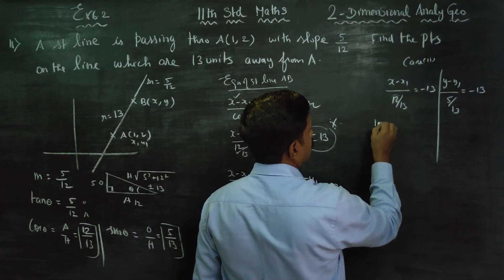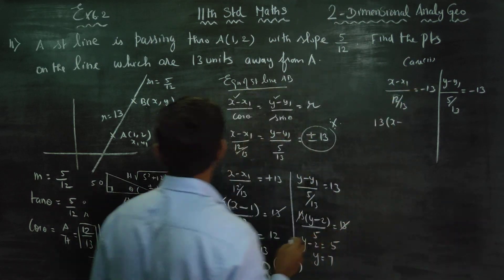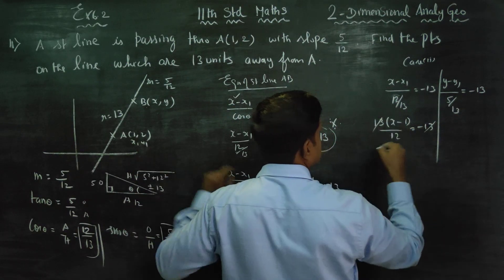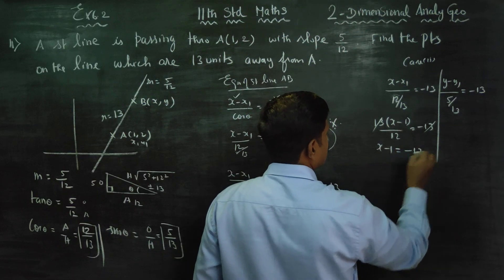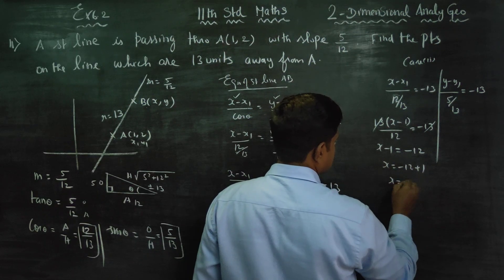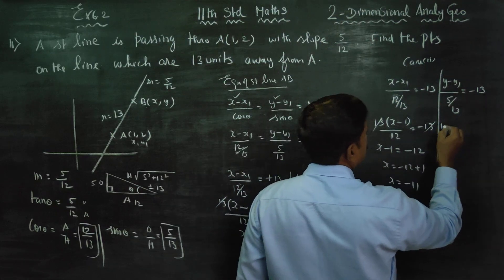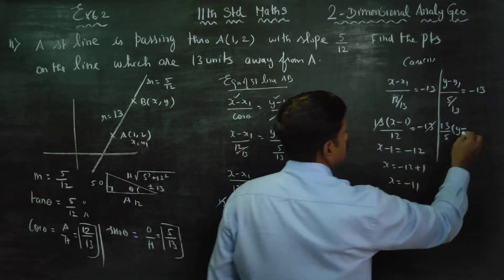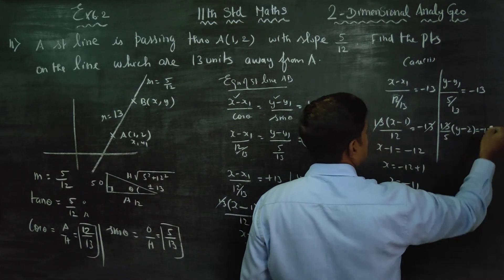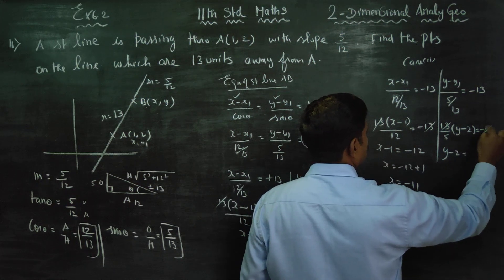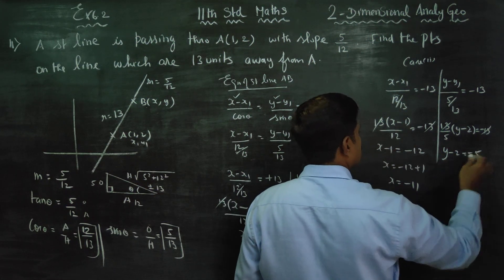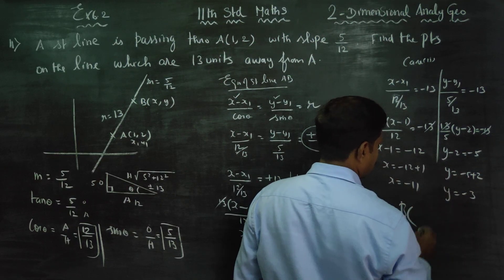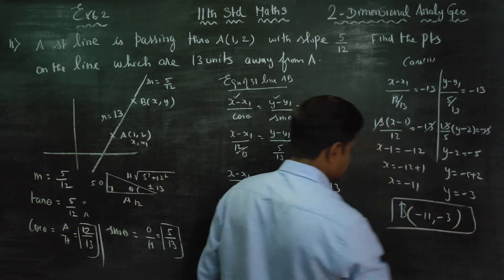Case 2: 13 into x minus x1 (which is 1) by 12 equals minus 13. Cross multiplying, x minus 1 equals minus 12, so x equals minus 11. For y: 13 by 5 into y minus 2 equals minus 13. Cross multiplying, y minus 2 equals minus 5, so y equals minus 3. The second point is (-11, -3).